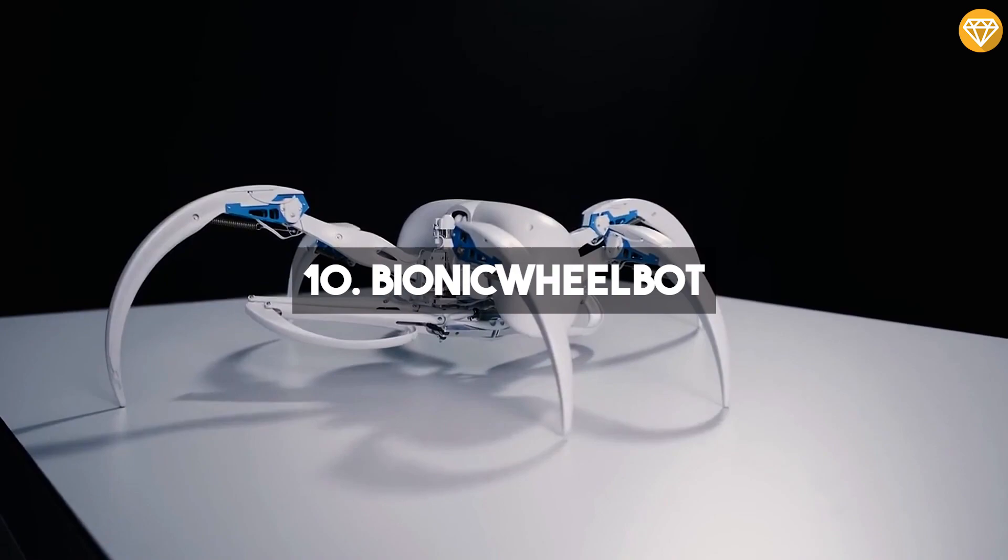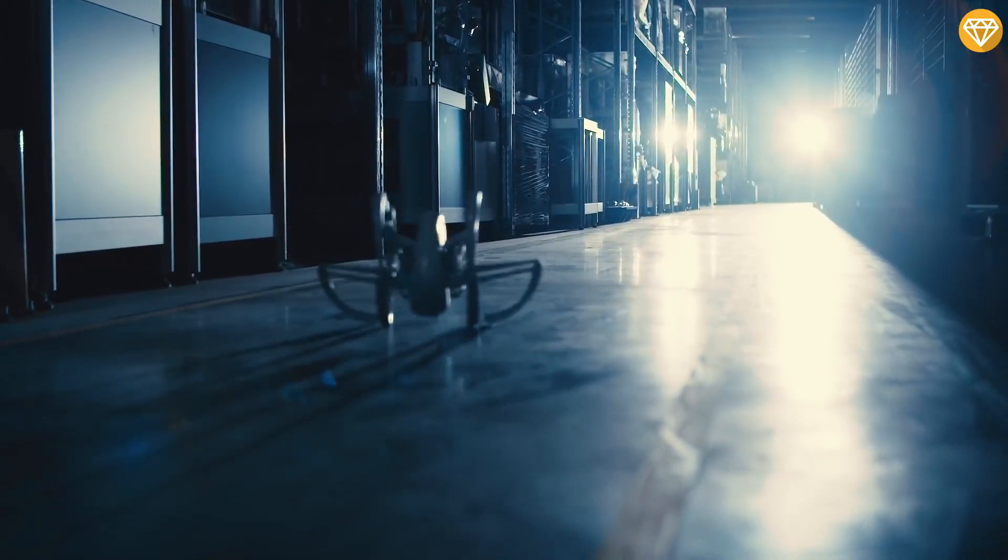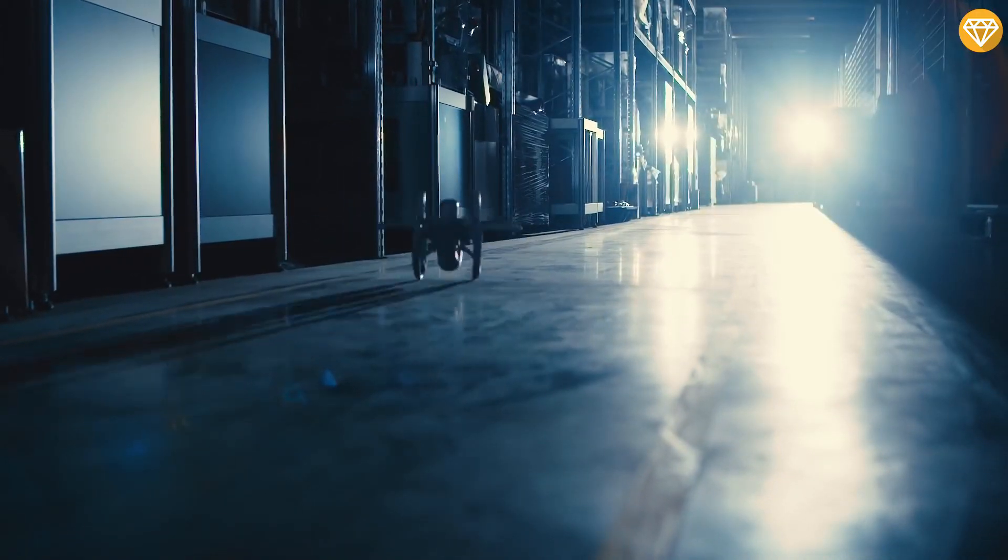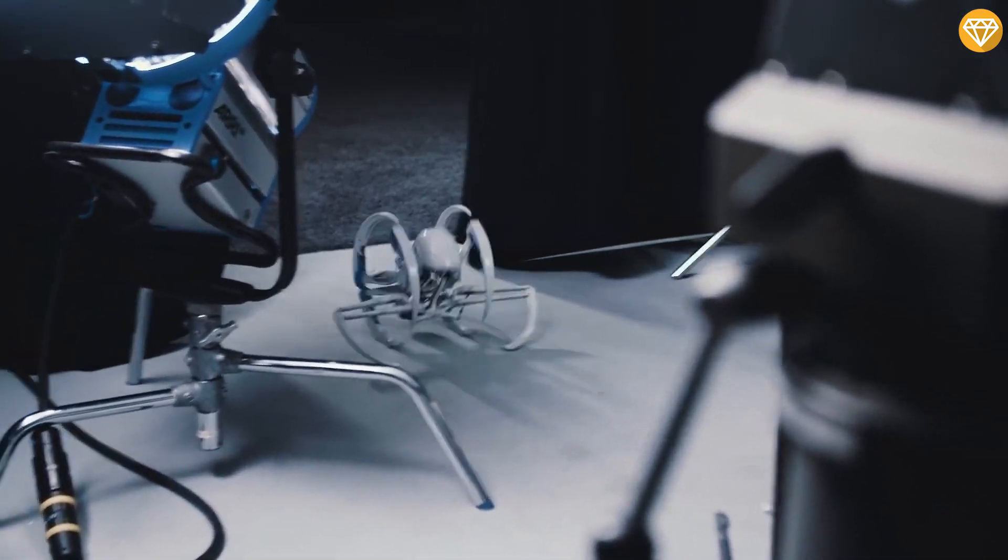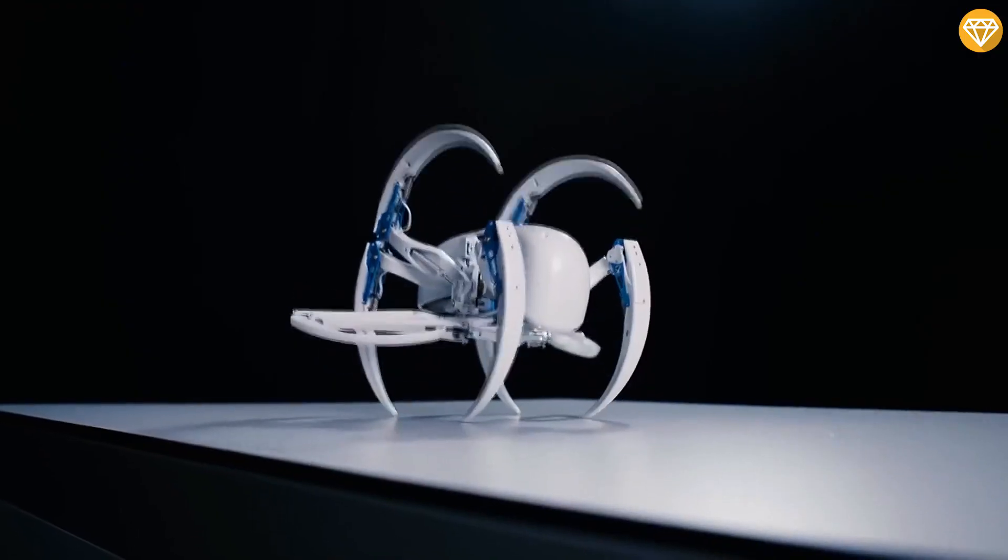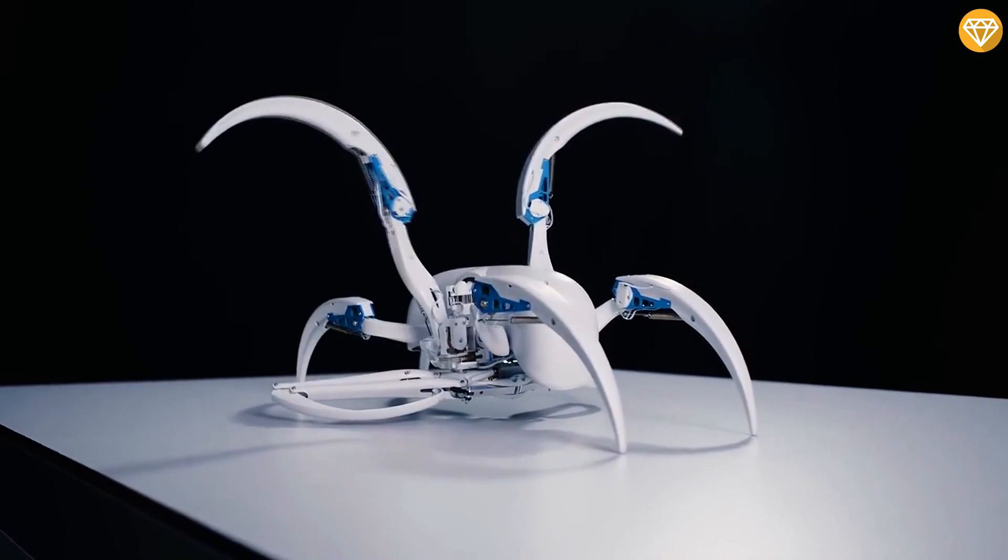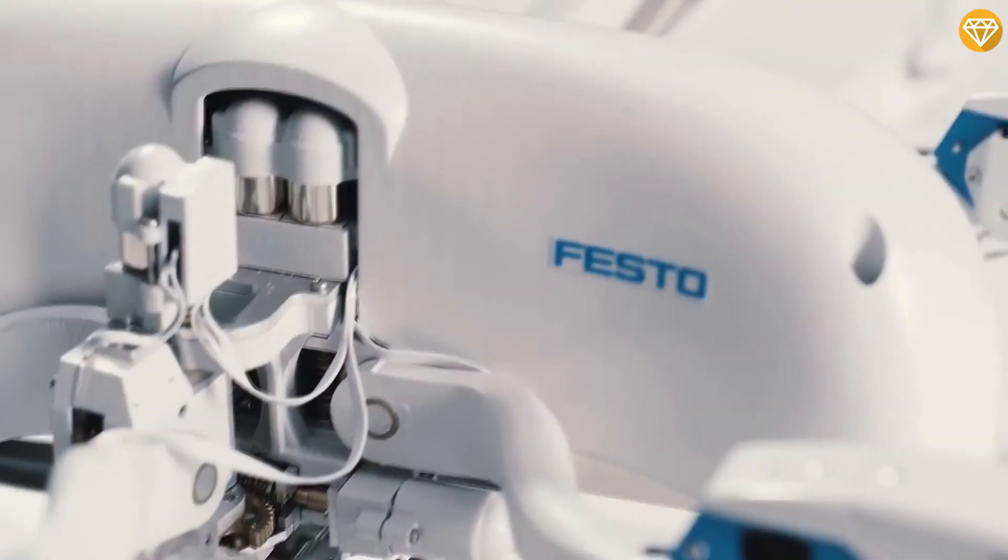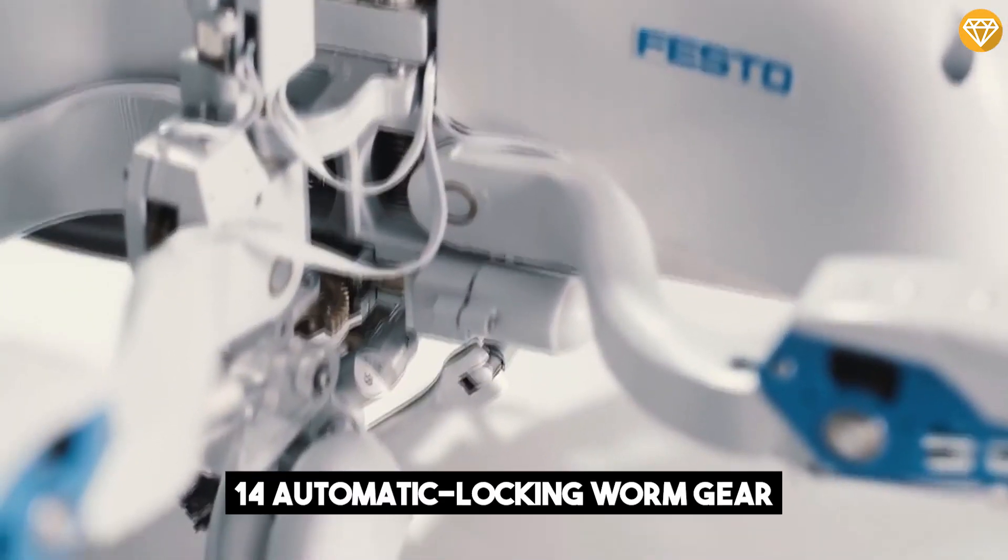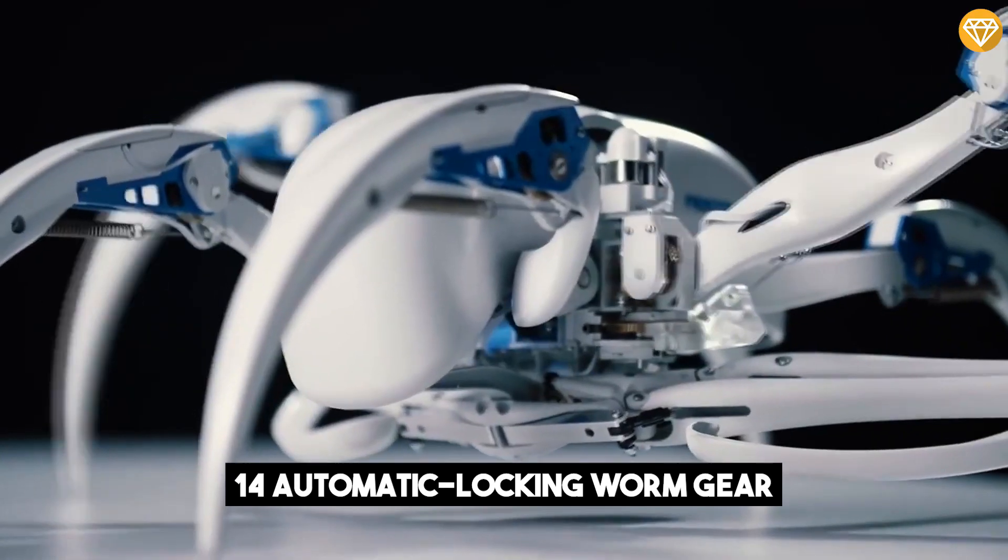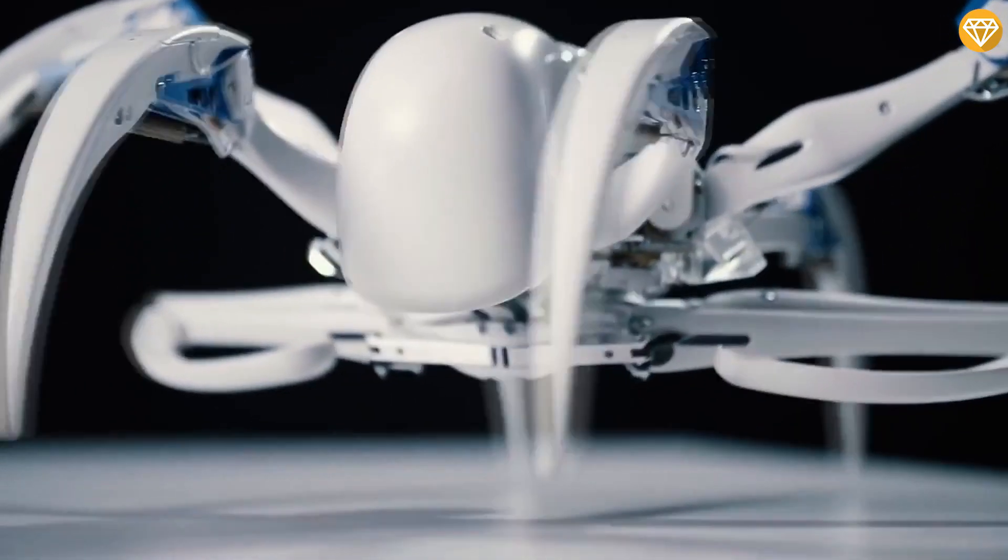Number 10, Bionic Wheelbot. This remarkable robot with eight legs is capable of walking and rolling. It utilizes 15 small motors in its knee joints and body to control its leg movements. To conserve energy while stationary, 14 automatic locking worm gear units stabilize its body without leg movement.